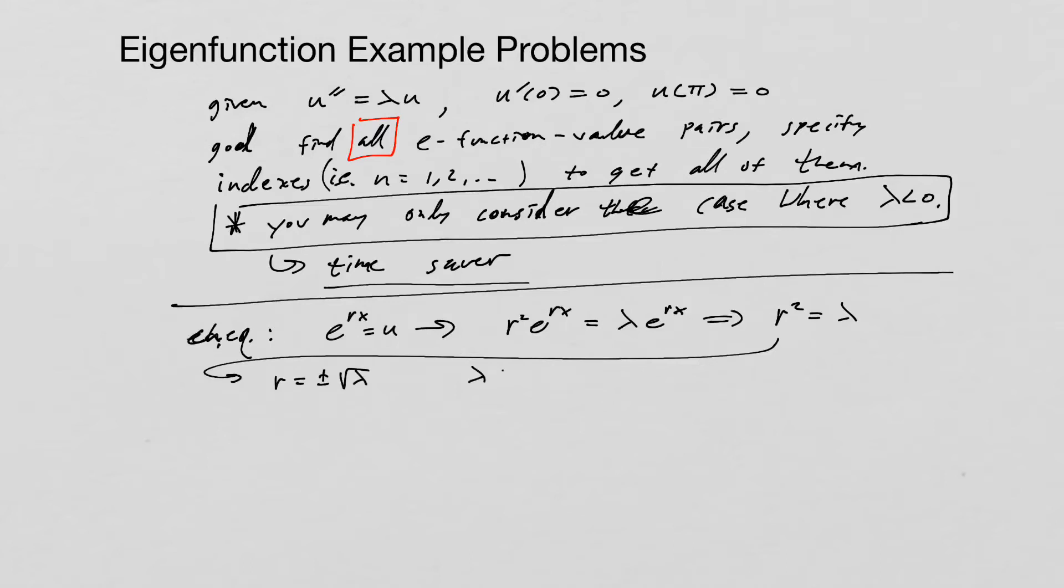So we know that lambda is less than zero. That was a fact that was in the beginning of the problem. So what that means is this is going to be imaginary. And to help out with this, we can just go plus or minus. We'll actually do a negative negative there. So I'll multiply by negative one. So that means that negative lambda is actually a positive number. What we can do here then is go plus or minus i times root negative lambda.